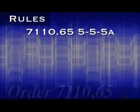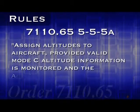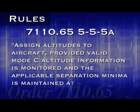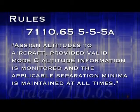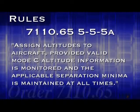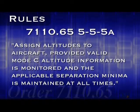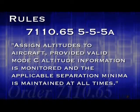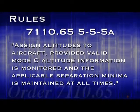Paragraph 5a discusses the basic prerequisite for using this kind of separation. It says: assign altitudes to aircraft, provided valid mode C altitude information is monitored, and the applicable separation minima is maintained at all times. This is saying that in order to apply mode C altitude separation, the aircraft in question must be sending valid mode C data.